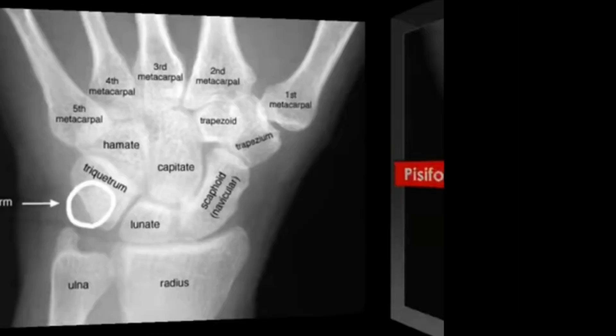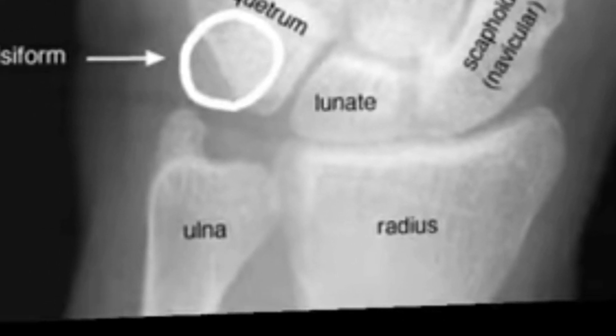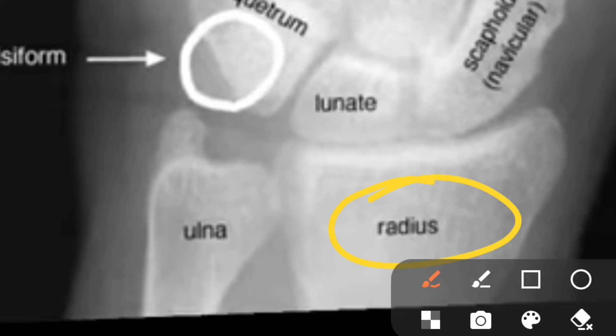You can see here — this is the radius, lower end of the radius, lower end of the ulna.